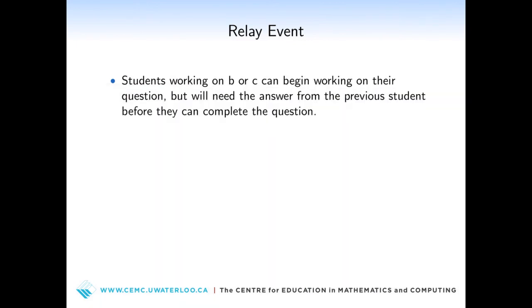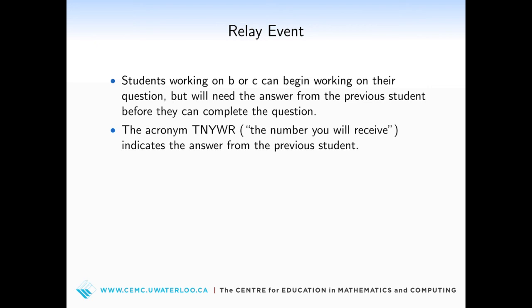Students in seats B or C can begin working on their questions, but will need an answer from the previous student before they can complete the question. The acronym TNYWR — the number you will receive — indicates the answer from the previous student.